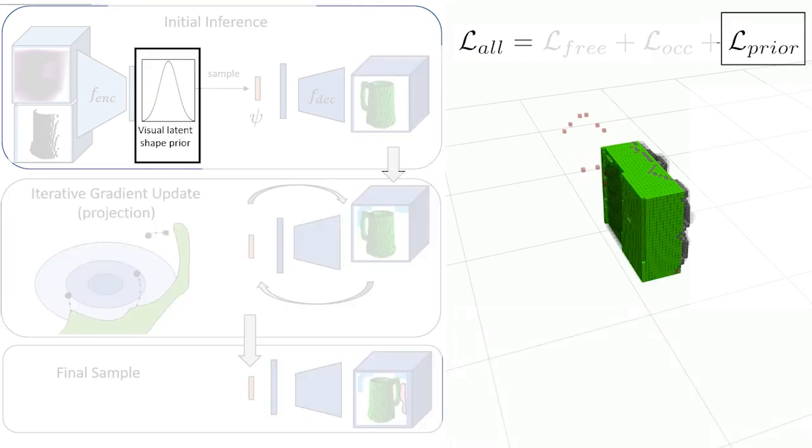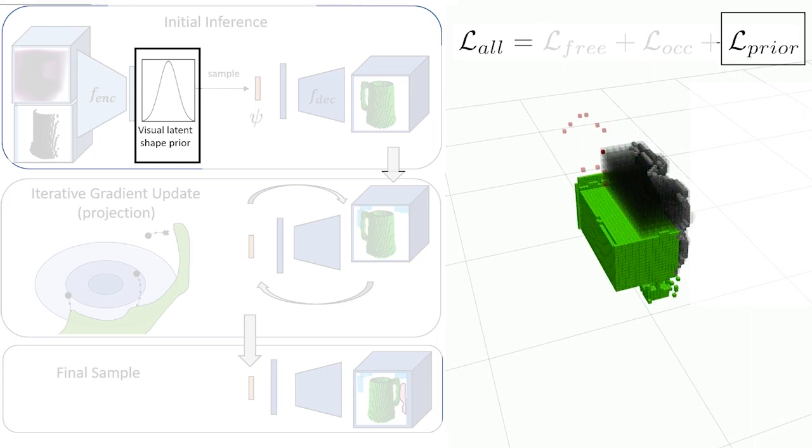The final term of the loss function penalizes latent shapes that deviate from the prior, ensuring that the information from the depth camera is not ignored. Without these terms, shapes can deviate wildly from the training data.